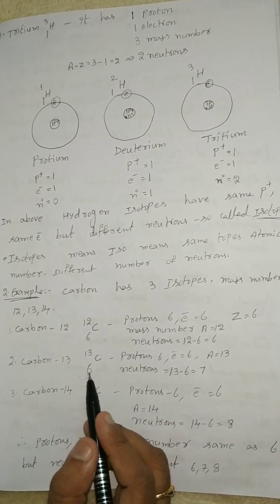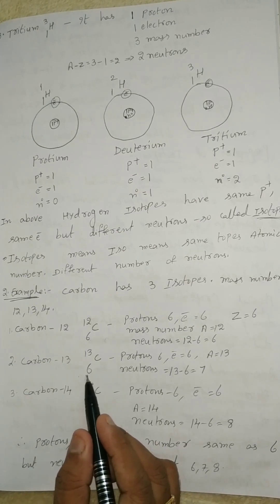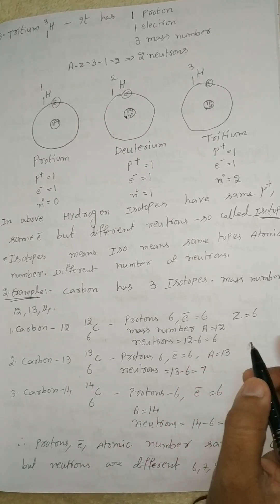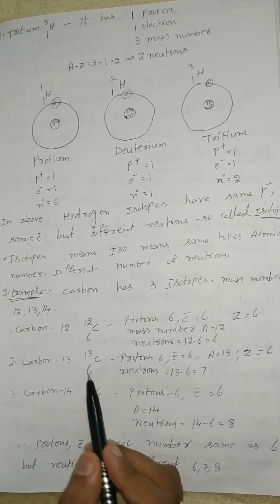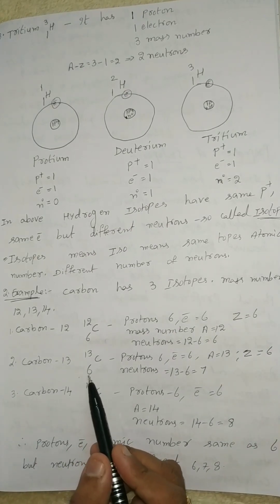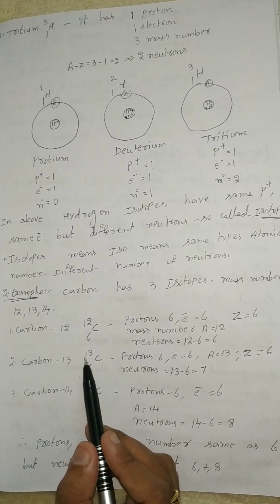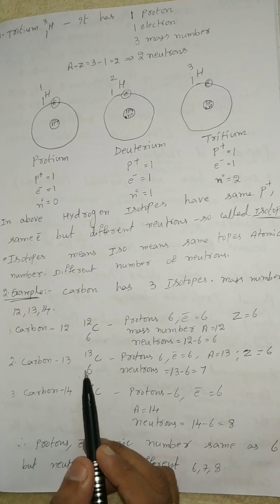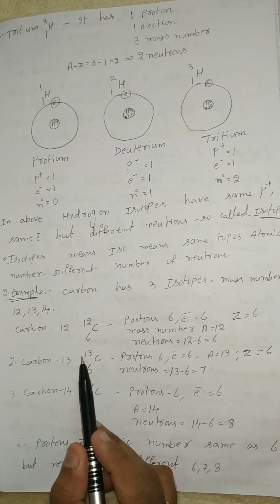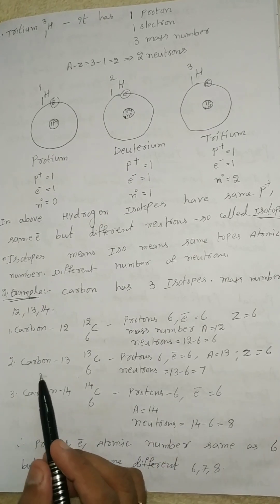Second one, carbon-13: 6C13. Atomic number Z equals 6, protons 6, electrons 6, and atomic mass A equals 13. Neutrons equal to A minus Z: 13 minus 6 equals 7. So neutrons in carbon-13 is 7.